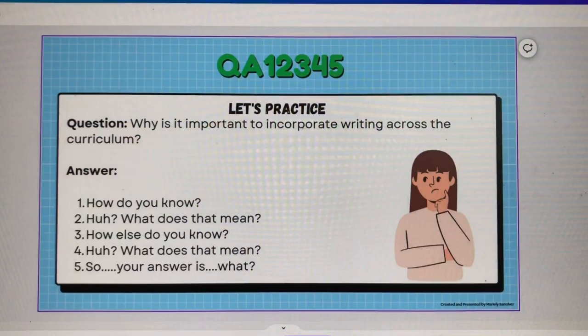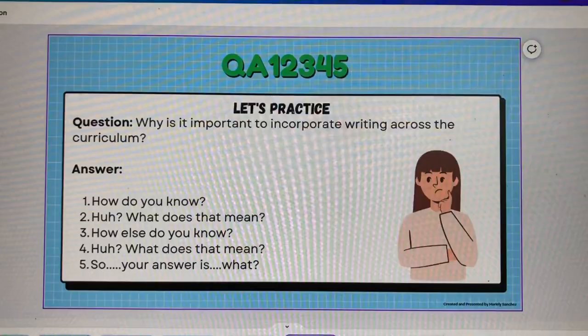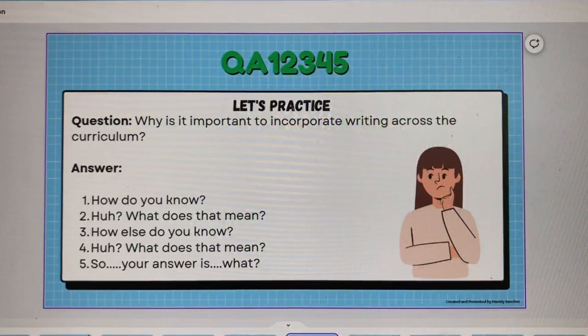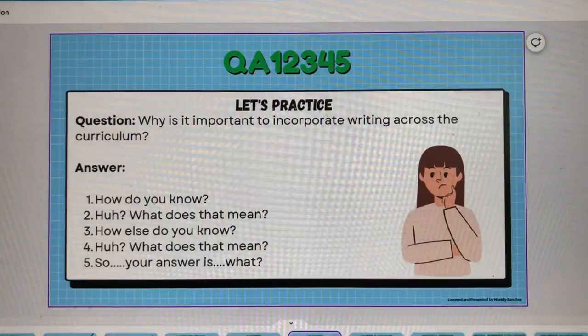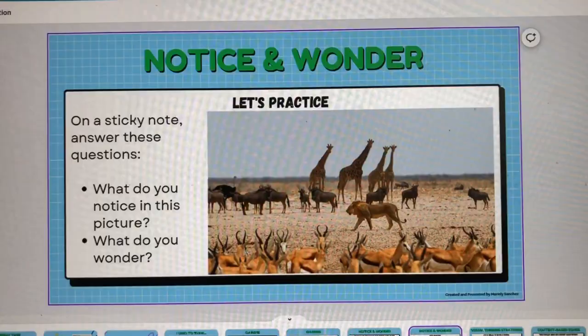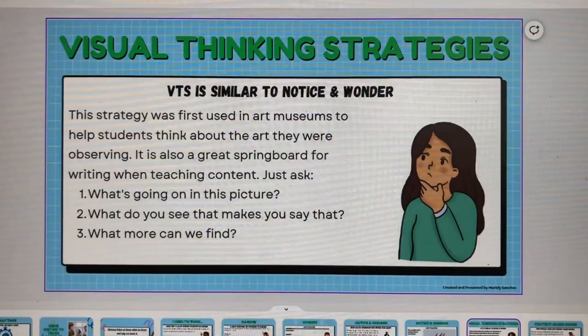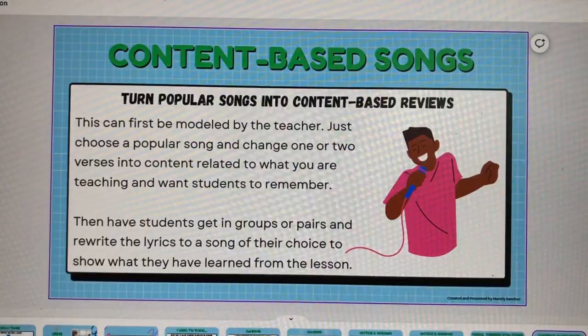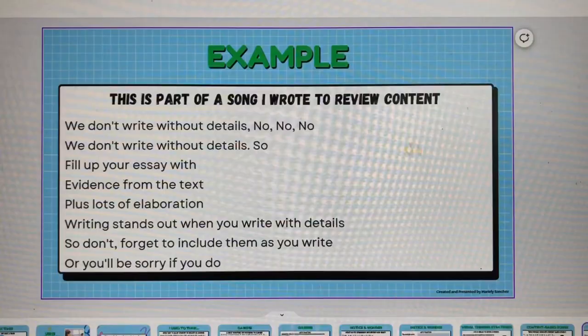The QA12345 strategy is from Gretchen Bernabei — I'll link the free resource from her website, including a script and simple practice questions, plus a comic-book-style conversation sheet created based on the strategy. Then we did Notice and Wonder, practicing with a picture and comparing it to visual thinking strategies — similar but with an extra question. We also covered content-based songs; teachers can create their own, like the one I made to 'We Don't Talk About Bruno' for writing.